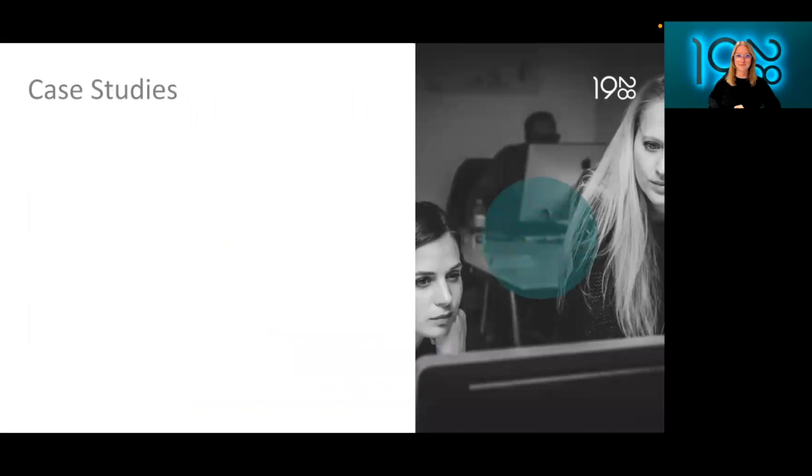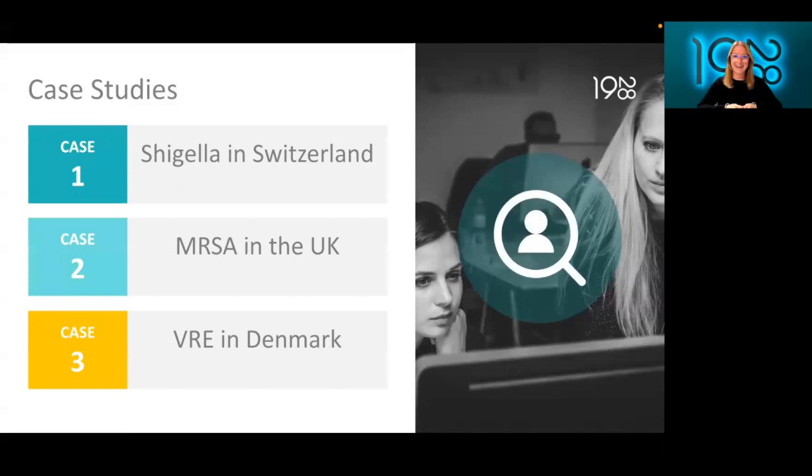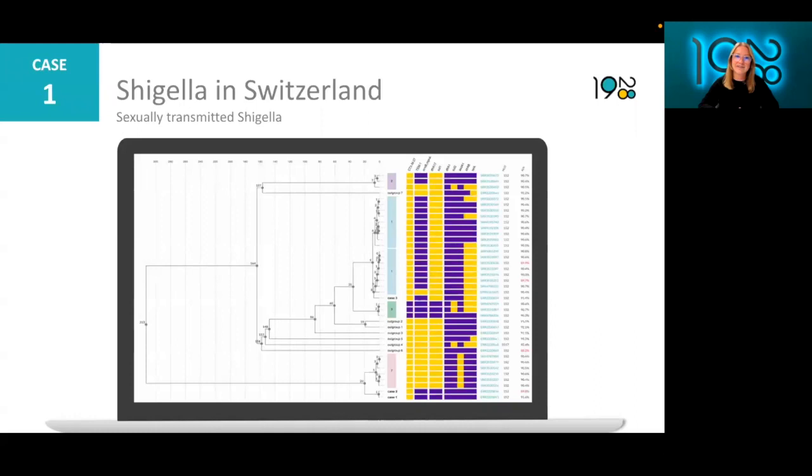And now finally, we get to the fun part, the case studies. I'm going to start us off with a case of Shigella in Switzerland, take us through MRSA in the UK, and then VRE in Denmark. The first case study for today is of a sexually transmitted Shigella outbreak identified in Switzerland. However, this study explores three patient cases that were likely contracted outside of Switzerland, and overall points towards a more regional European outbreak. Shigella, causing Shigellosis, is a bacteria that largely goes unreported and is not specifically tracked across Europe. These cases were of a strain particularly vulnerable to antimicrobial resistance, and seem to be common strains that circulate in the men who have sex with men population within Europe. Despite this, the only detailed research into Shigella outbreaks of this kind, at the time of publication, had been done in the UK.